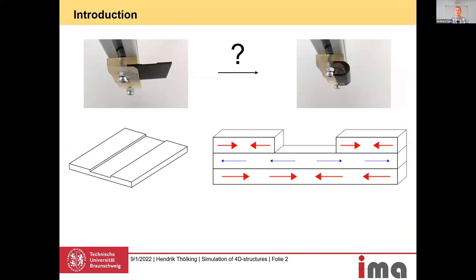When we are 4D printing with FDM, we are always imprinting strain into the layers. Here is an example geometry we use in our institute — it's a bending hinge. We imprint high strain in the bottom layer, middle strain in the middle layer, and high strain in the top layers, so we get a bending action, as you can see at the top of the slide.